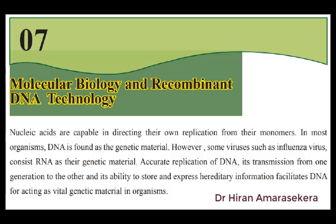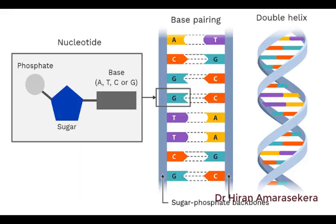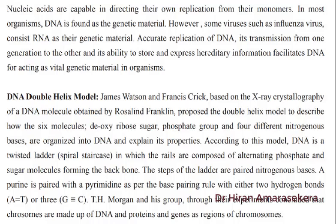Let's start with the star of the show: DNA. It's basically the genetic material for pretty much all life on Earth. But the audio brings up some interesting exceptions — certain viruses like influenza, HIV, and the coronaviruses use RNA instead of DNA. While DNA is the primary player in most organisms, the fact that RNA can carry genetic information in these viruses shows how adaptable these fundamental molecules are.